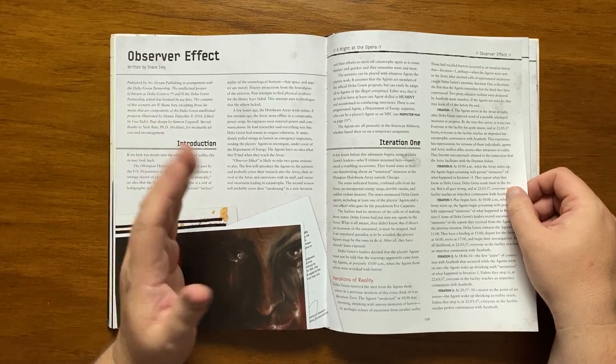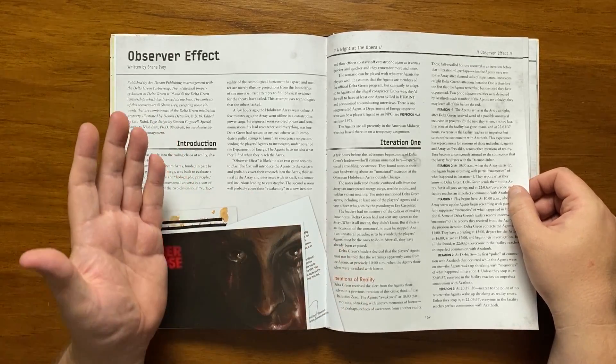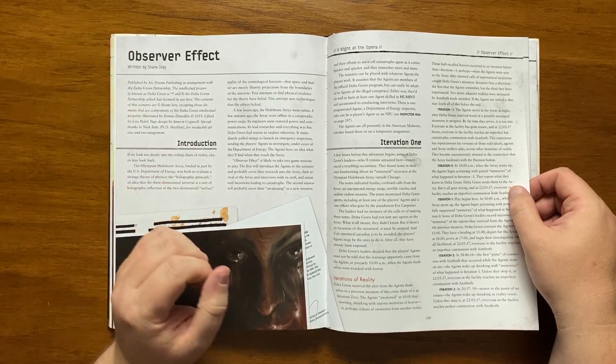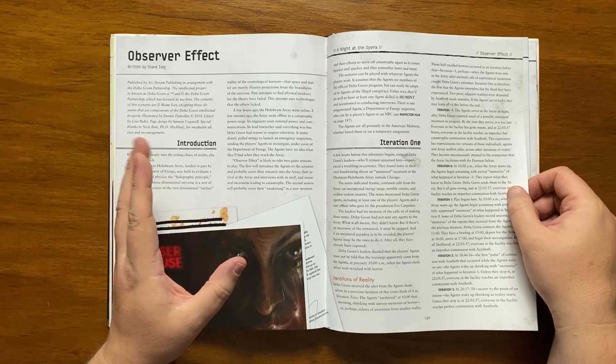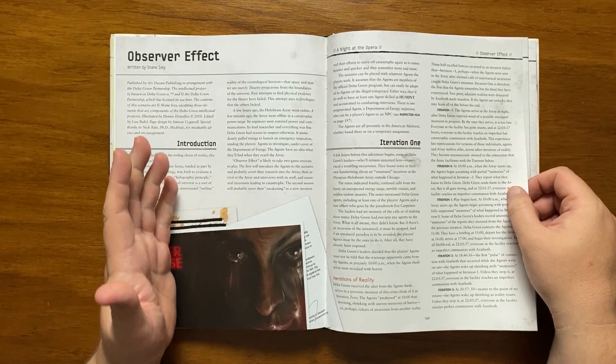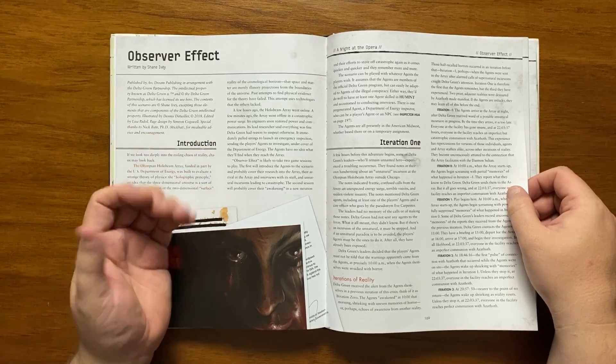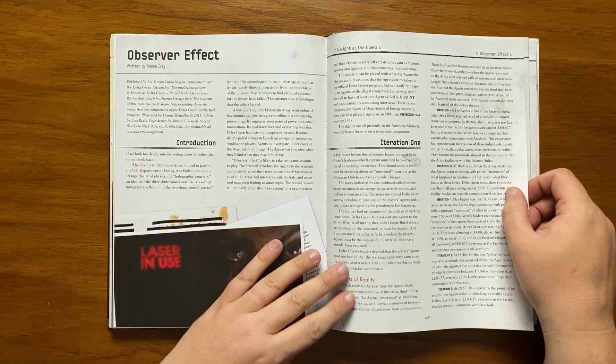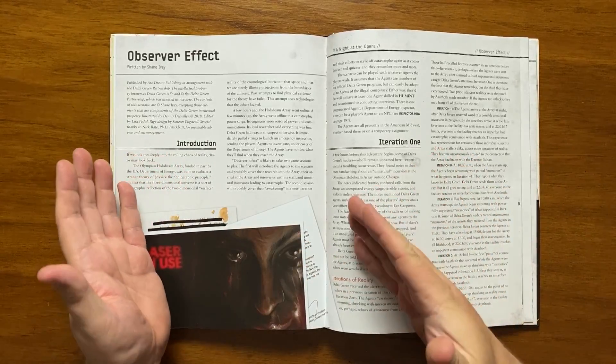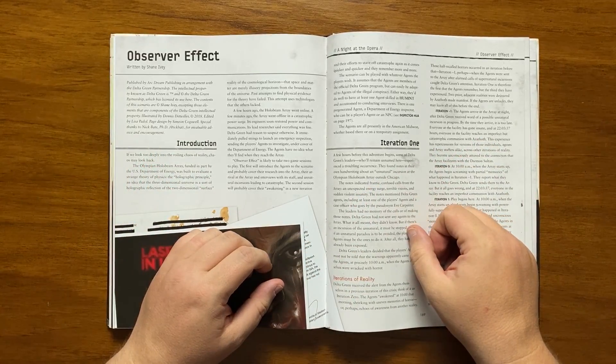It begins for the players with them waking up at 10am that morning shrieking in terror but not understanding why. These are half recalled horrors Iteration 0. There is essentially an Iteration minus 1 when they were sent to the array after Delta Green detention was captured, so this is their third as two have been devoured by the Demon Sultan, Azathoth.